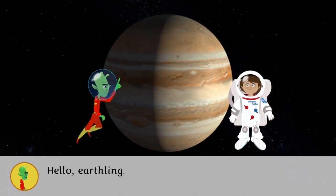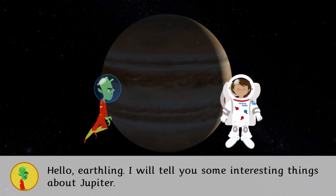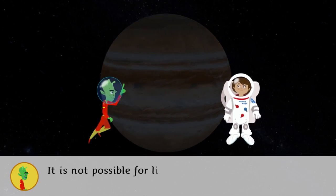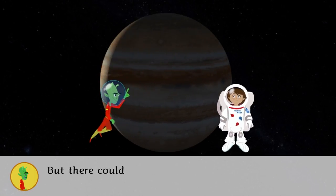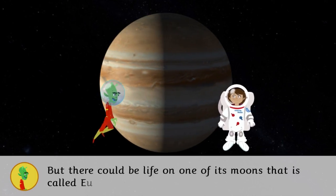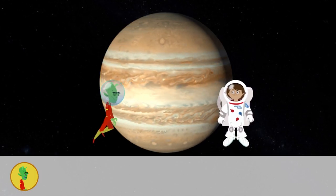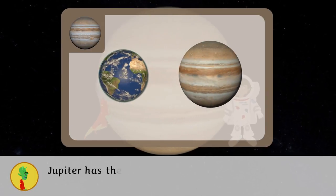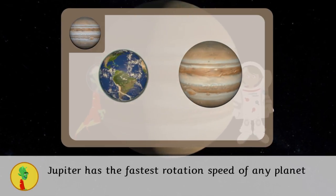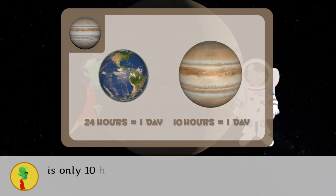Hello Earthling. I will tell you some interesting things about Jupiter. It is not possible for life on Jupiter, but there could be life on one of its moons that is called Europa because it has a huge ocean. Jupiter has the fastest rotation speed of any planet and one day on Jupiter is only 10 hours on Earth.